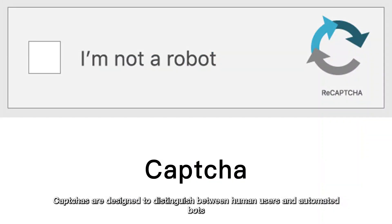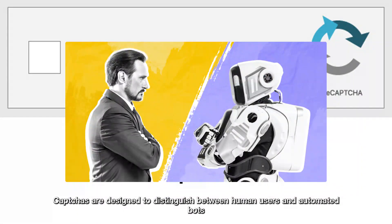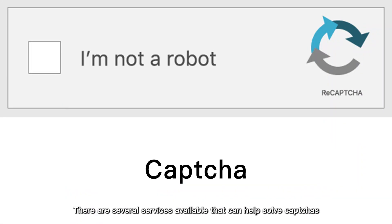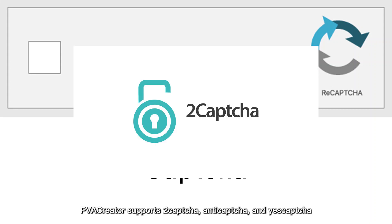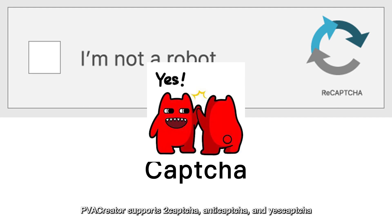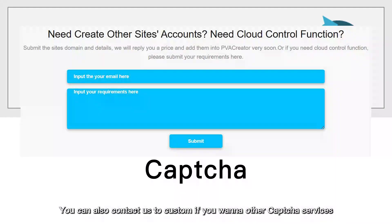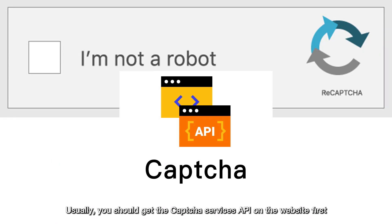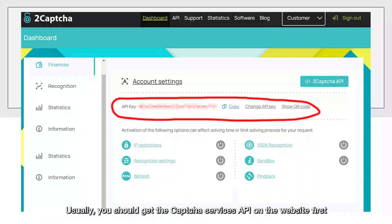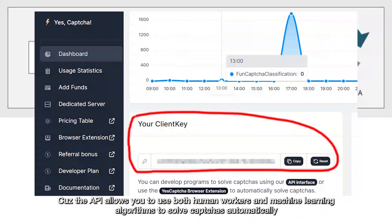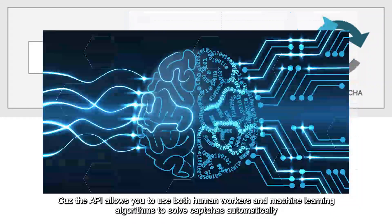CAPTCHAs are designed to distinguish between human users and automated bots. There are several services available that can help solve CAPTCHAs. You can also contact us to customize if you want other CAPTCHA services. Usually, you should get the CAPTCHA service's API on the website first, because the API allows you to use both human workers and machine learning algorithms to solve CAPTCHAs automatically.